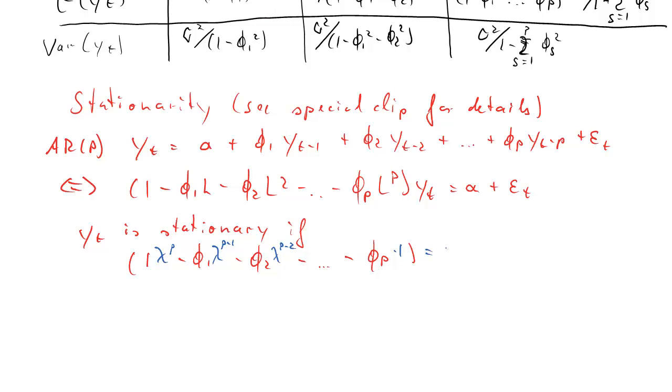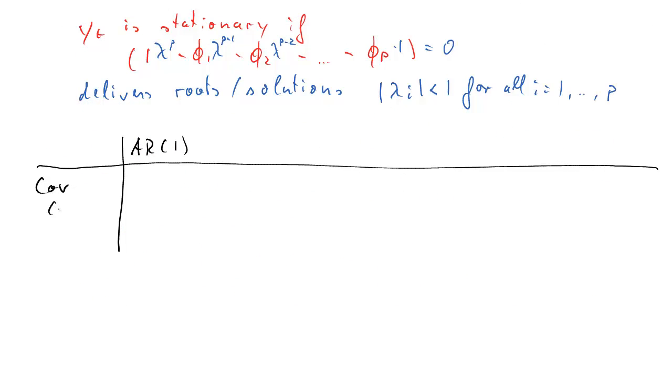So that polynomial we would set equal to 0. That's what we call the characteristic equation. And if that equation delivered solutions, or sometimes called roots, solutions for lambda that were in absolute value smaller than 1 for all p solutions, so that i will go from 1 to p, if all these solutions were in absolute value smaller than 1, then we had a stationary process.